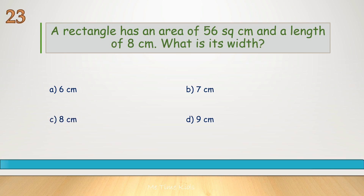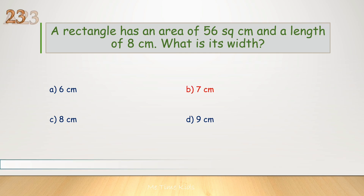A rectangle has an area of 56 square centimeters and a length of 8 centimeters. What is its width? Correct answer is B, 7 centimeters.